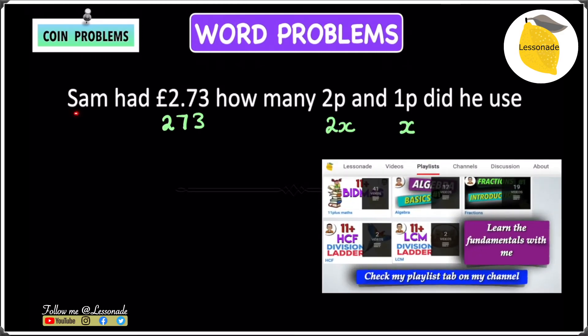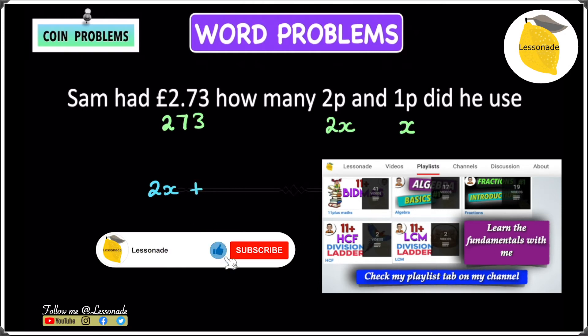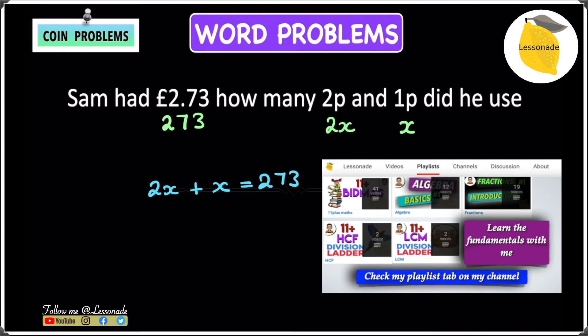So we know that Sam used both 2p and 1p to give us £2.73. In other words, he used both 2x, which is 2p, and 1p, which is x. So 2x plus x, which will give you 273. So 2x plus x will give you 3x. And then we have 3x equals 273.